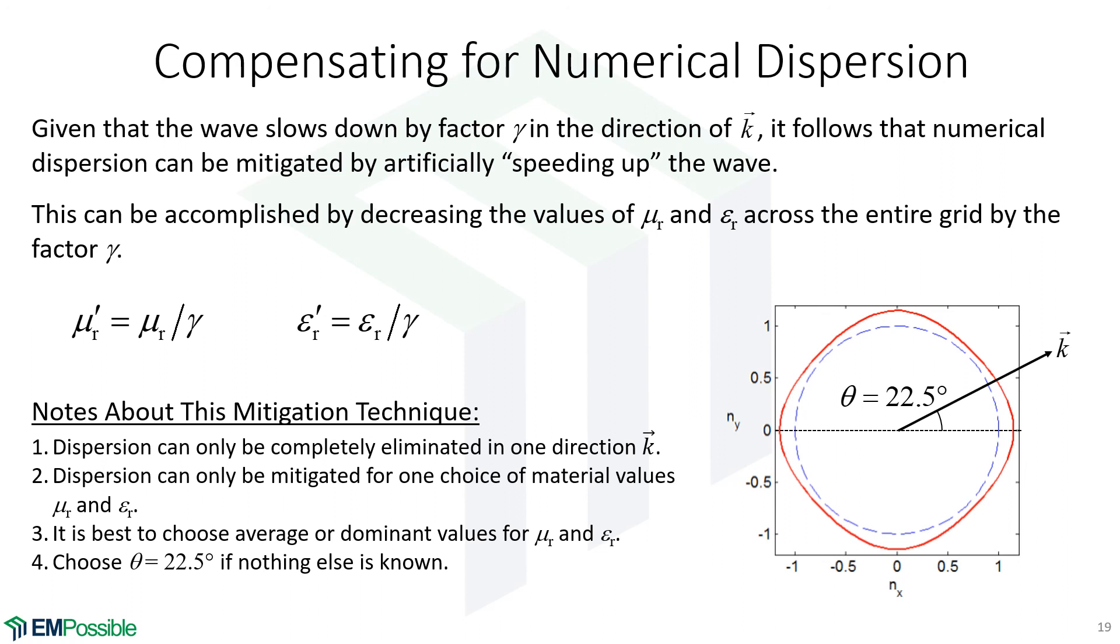We calculate the compensation factor and then lower the relative permittivity and relative permeability according to that fudge factor or compensation factor, and we've compensated for the dispersion. And this works very well.